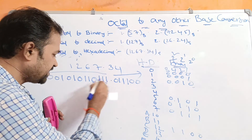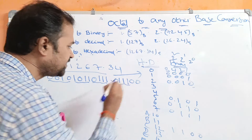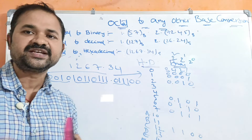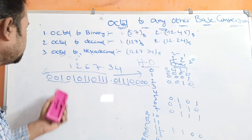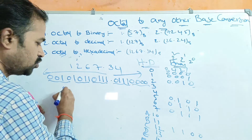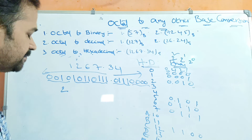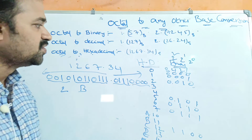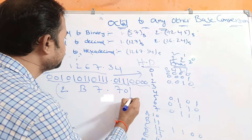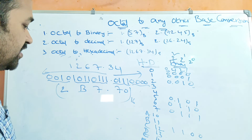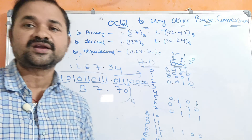Grouping the bits: 0010 is one group, 1011 is one group, 0010 is one group, and 0111 is one group. For the last 2 bits of the fractional part, we append 2 zeros since it won't change the result. 0010 in hexadecimal is 2. 1011 means 8 + 2 + 1 = 11, which is B. 0111 means 4 + 2 + 1 = 7. So the result is 2B7.70 hexadecimal — approximately 2B7.7. This is how we convert an octal number to hexadecimal, completing the octal to any other base conversion.